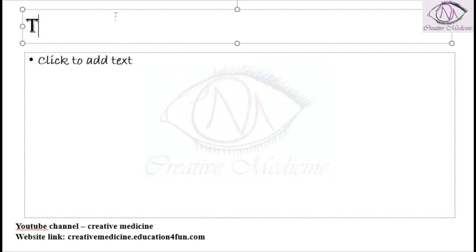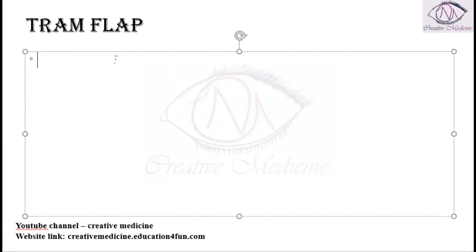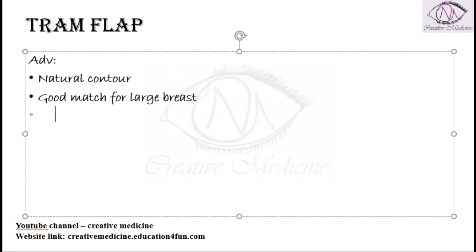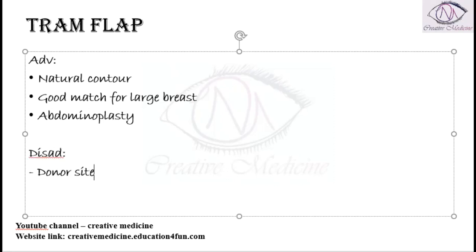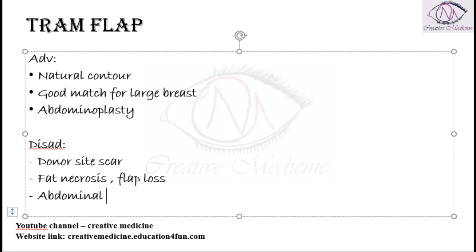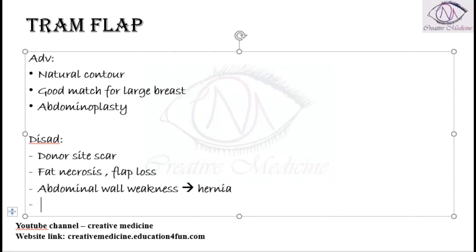The last option is the transverse rectus abdominis muscle flap, or TRAM flap. The advantages are natural contour, a good match, and it can be used for large breasts. Abdominoplasty is also done here. The disadvantages include donor site scar, fat necrosis, and flap loss. Because the muscle is taken from the rectus abdominis, abdominal wall weakness is common, which can cause hernia. There is also prolonged hospitalization and prolonged recovery.